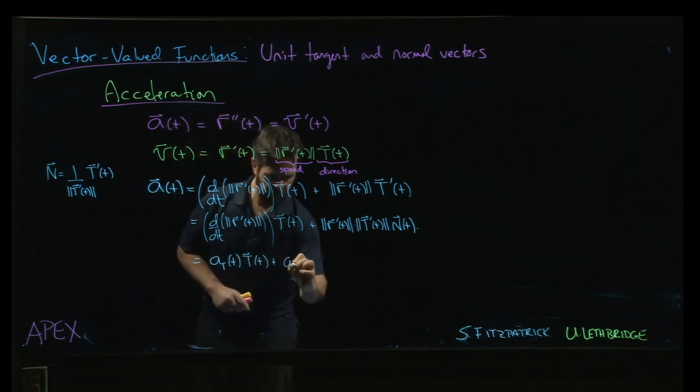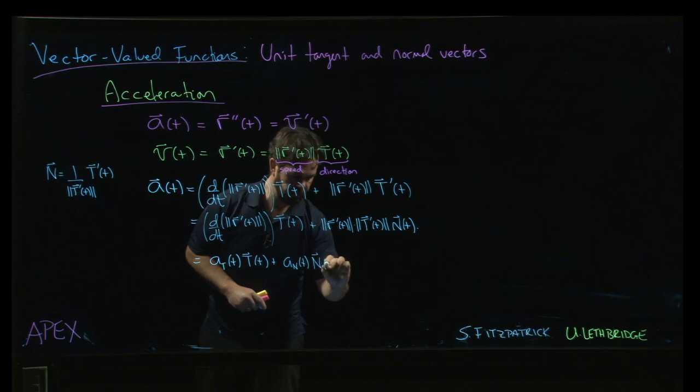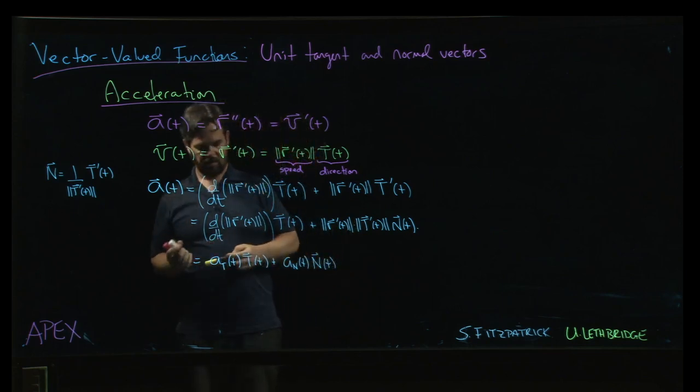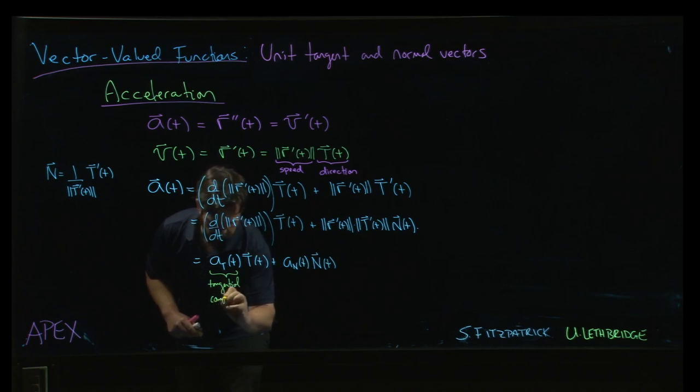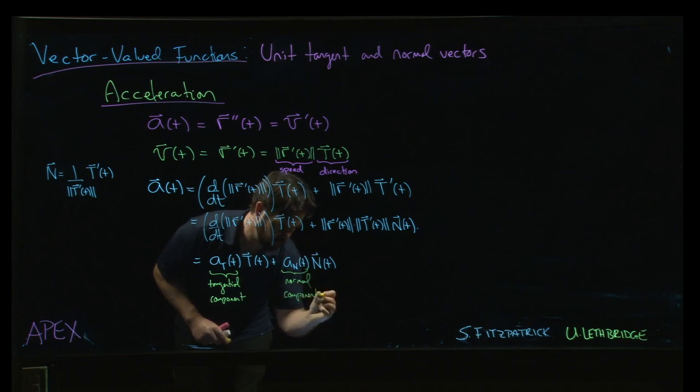Plus a sub n, which is the normal component of the acceleration, times the unit normal vector. So we have this kind of tangential component and the normal component.